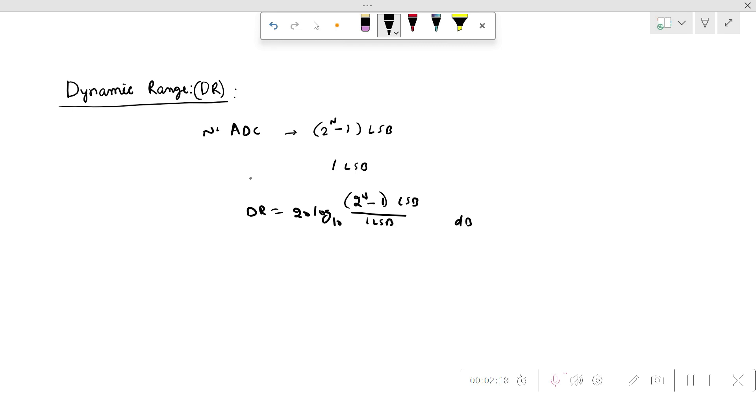In dB, this is dynamic range in decibel. This comes down to approximately 6.02n, where n is the number of bits of the ADC or the effective number of bits of the ADC.